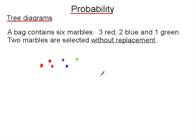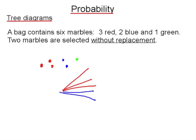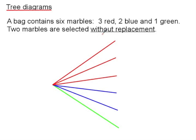The first part of the tree diagram represents the first marble drawn out of the bag. Because we have three red marbles, we have three red branches, then two blue branches and then one green branch. Because the instructions say we take the two marbles without replacement, the branches that follow depend on what's gone on before.